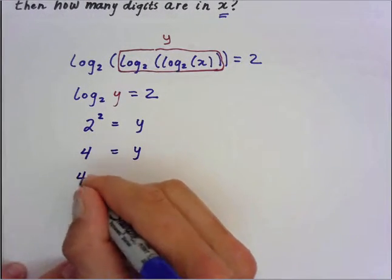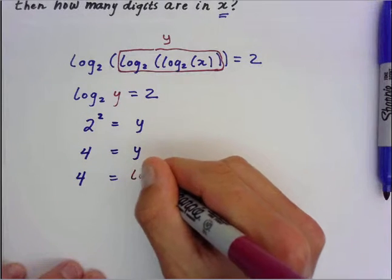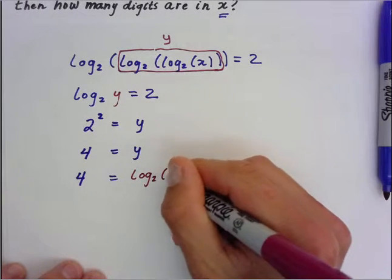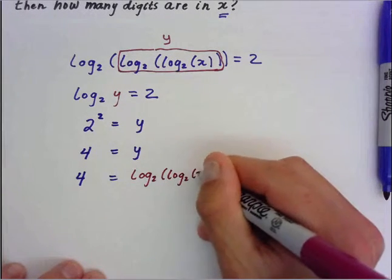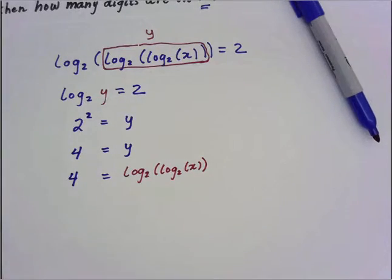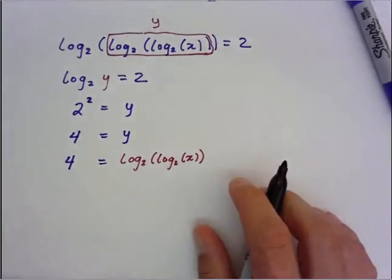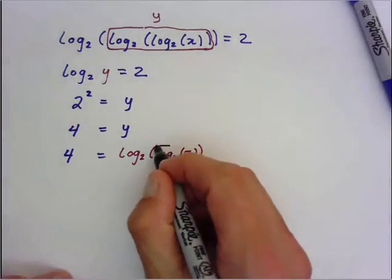Well, we know what y is. y was log base 2 of log base 2 of x. So we substituted back in now. So we do the same thing one more time. So let's look at taking this and calling it something else.